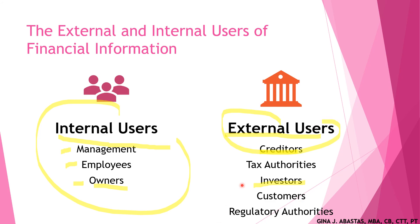External users of accounting information include creditors, for determining the creditworthiness of an organization. Terms of credit are set by creditors according to their assessment of customers' financial health. Creditors include suppliers as well as lenders of finance such as banks. Tax authorities, such as the BIR, use accounting information for determining the credibility of tax returns filed on behalf of the company. Investors use accounting information for analyzing the feasibility of investing in a company, wanting to ensure a reasonable return on their investment before committing financial resources. Customers use it for assessing the financial position of suppliers, necessary to maintain a stable source of supply in the long term.